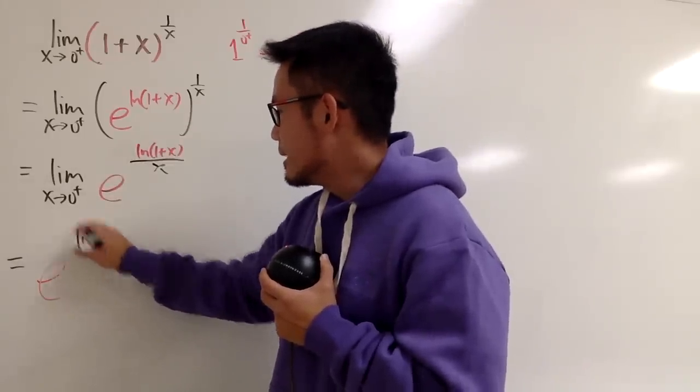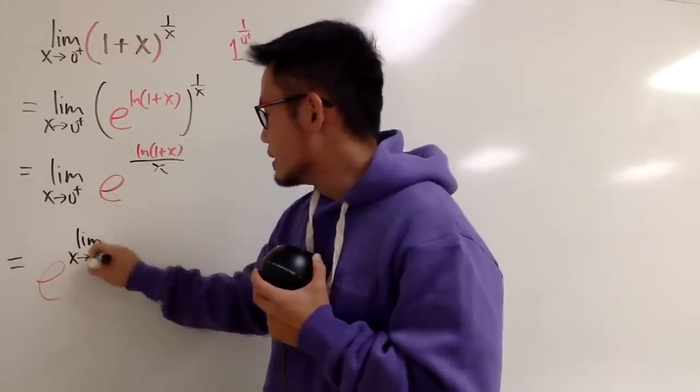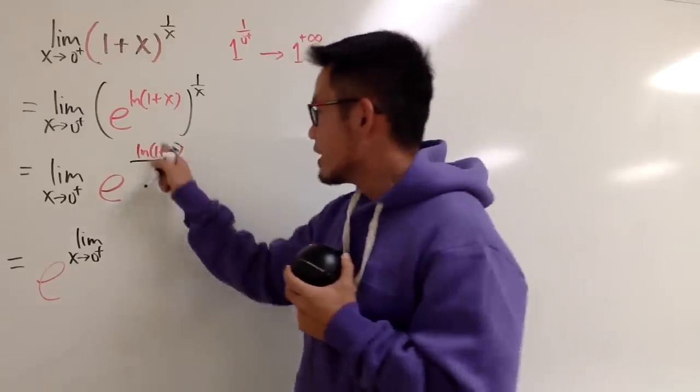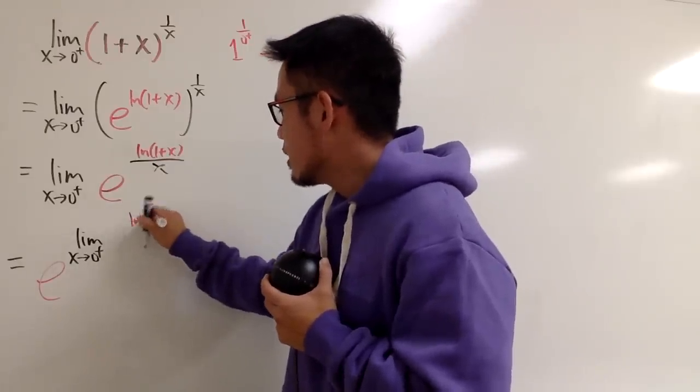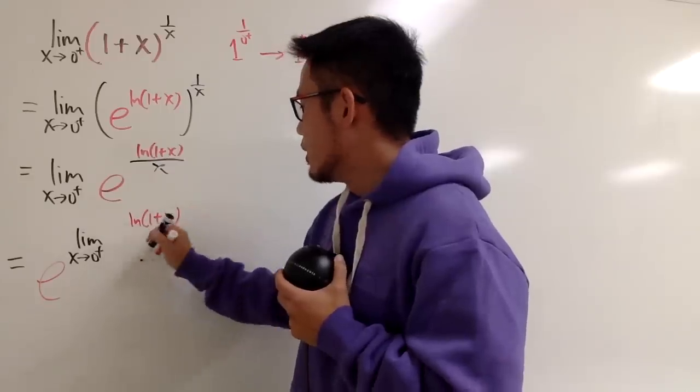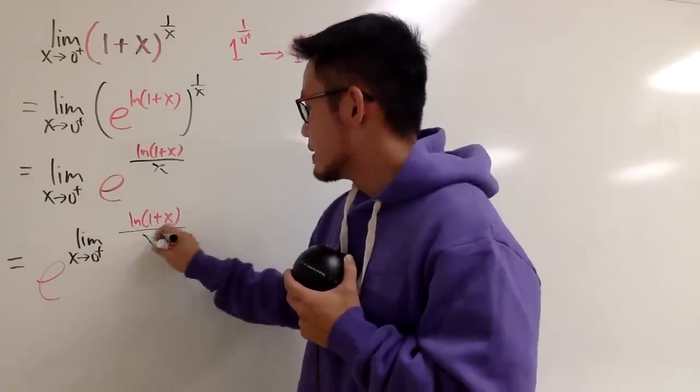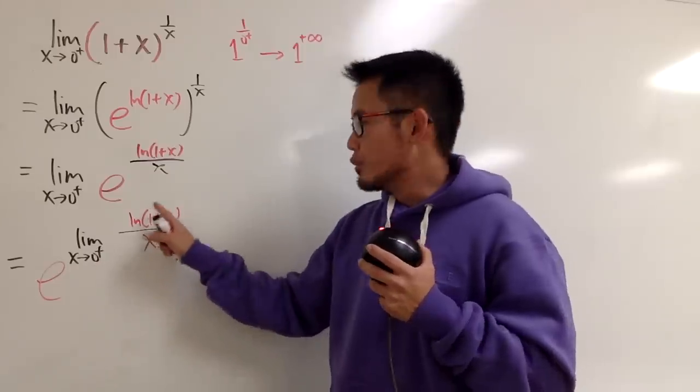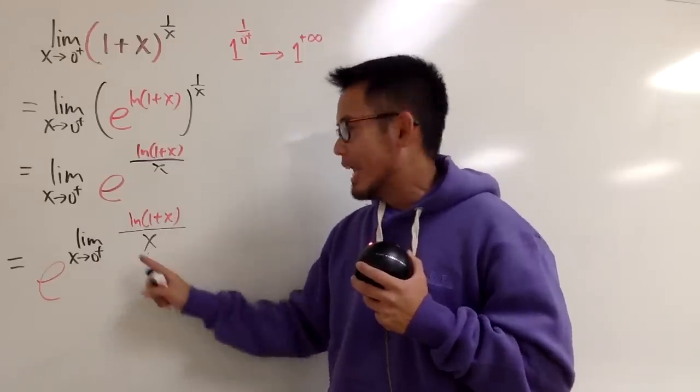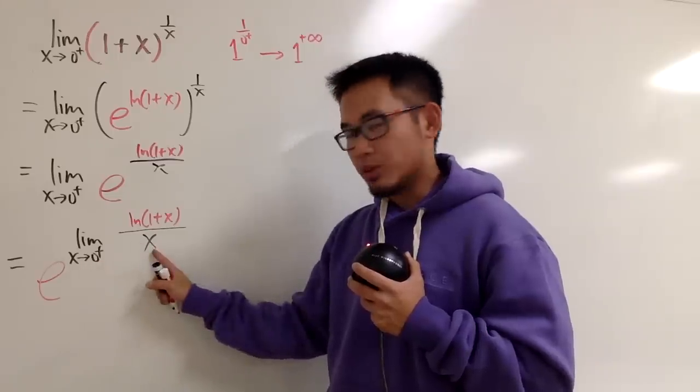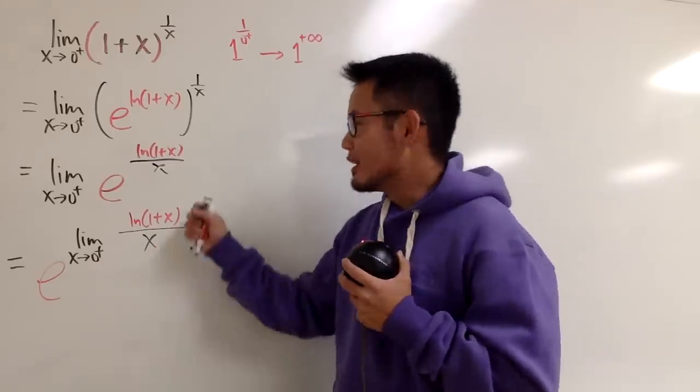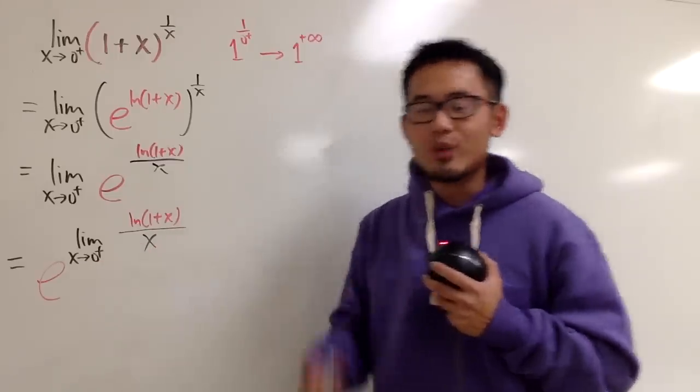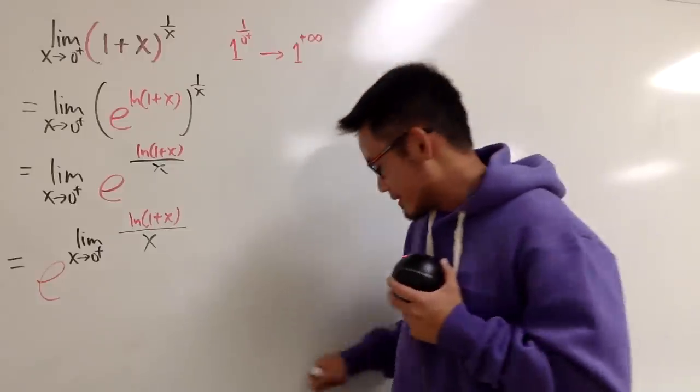e for the base, and we'll focus on taking the limit of this part. So let me write down. The limit as x goes to 0 plus, and here we have ln of (1+x) over x. And if you plug in 0 plus into here, you get ln 1, which is 0, and then when you plug in 0 plus into here, you get 0. You get a 0 over 0 situation. So we have to do L'Hôpital's rule, right?